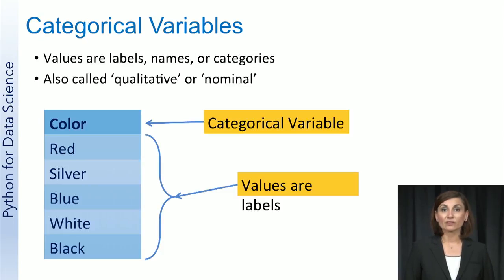A variable with labels, names, or categories for values instead of numbers is called a categorical variable. For example, a variable that describes the color of an item, such as the color of a car, can have values such as red, silver, blue, and black.